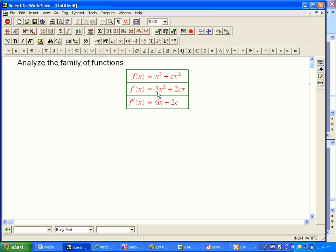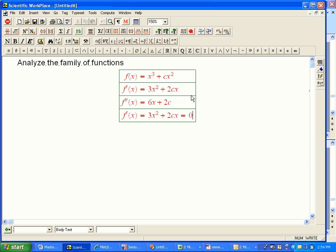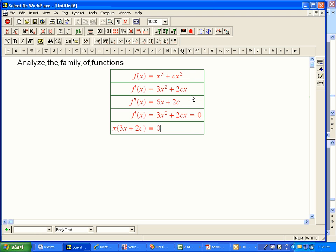So obviously one interesting thing to do is simply set this equal to zero and look for whether and where the solutions, whether they have solutions and where the solutions would be. So let's go back to f prime, 3x squared plus 2cx, let's set it equal to zero. And so you can factor out an x there, 3x plus 2c equals zero.